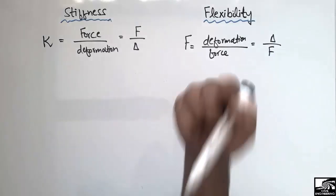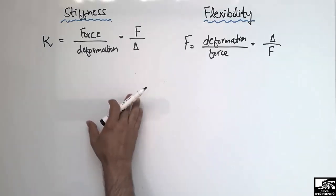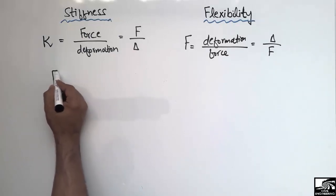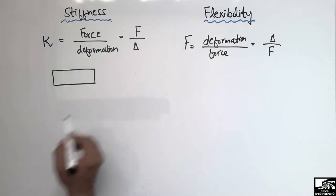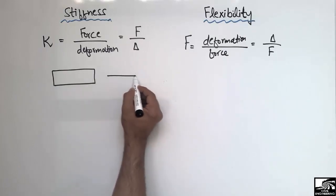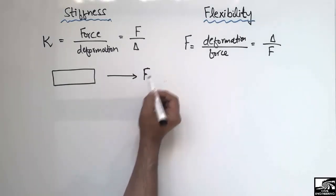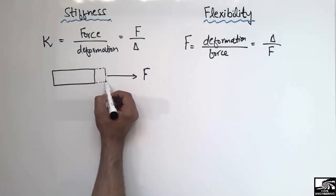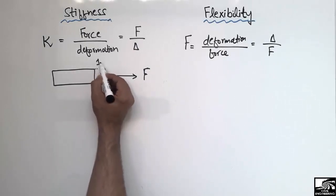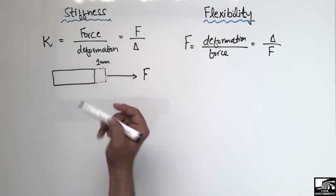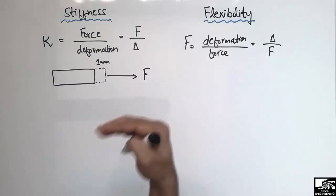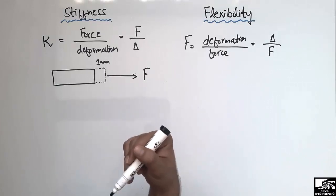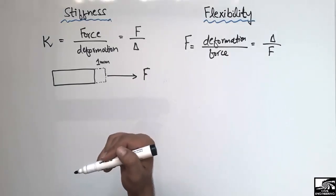To explain in detail, let's consider a material where we apply a force and observe the resulting deformation. This deformation is one millimeter — let's consider this as a unit deformation. If more force is required to produce that unit deformation, we call such a material a more stiff material. If less force is required, we call it a less stiff material.